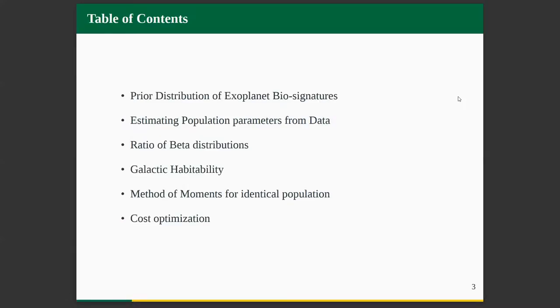Before I begin, it's not nice to not share the motivation for my work, but before that, I'll share a brief table of contents so that everyone just keeps up with what I'm doing. At the very beginning, I'll talk about prior distribution of exoplanet biosignatures, and after that, I'll look at data sets, not really data sets because we don't have that much data, but I'll look like if we have some data, how would we understand about the population parameters of the variables.